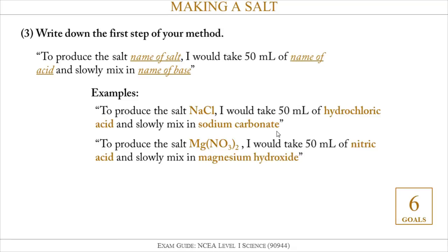Unless the question tells you to pick something specific, the choice of base is up to you. The other example in our question was magnesium nitrate, so you would write: to produce the salt magnesium nitrate, I would take 50 mL of nitric acid and slowly mix in magnesium hydroxide. Alternatively, you could pick magnesium oxide or magnesium carbonate, unless the question specifies exact starting materials.